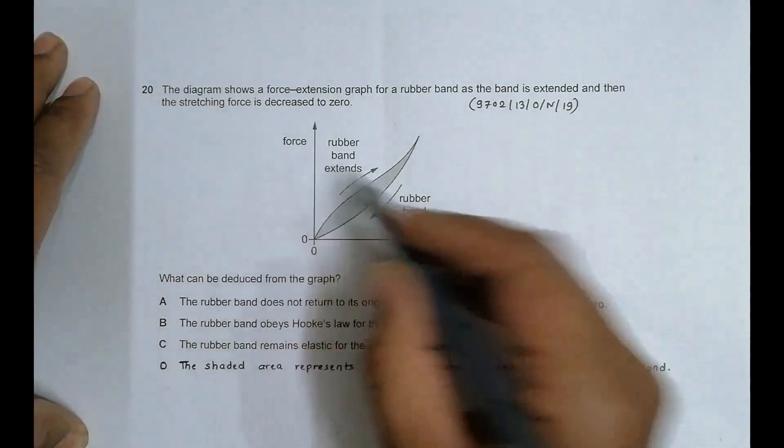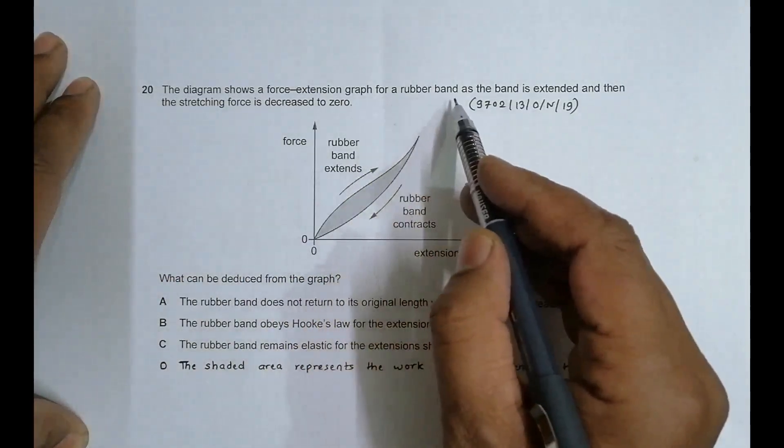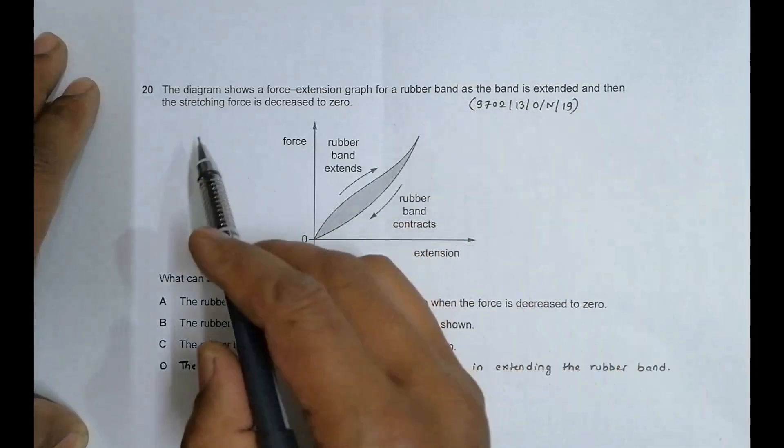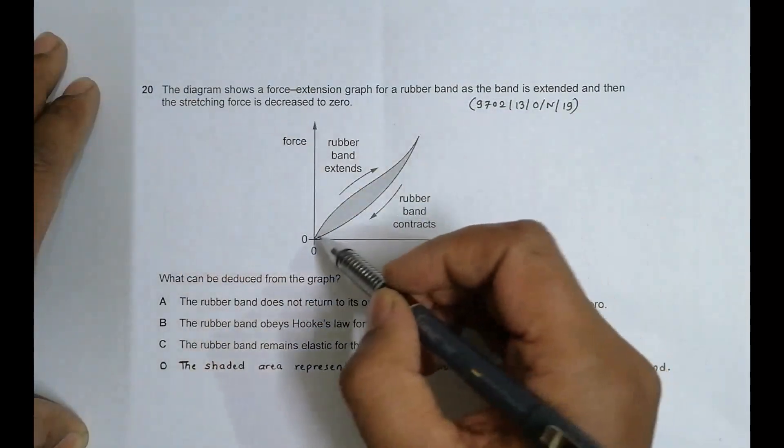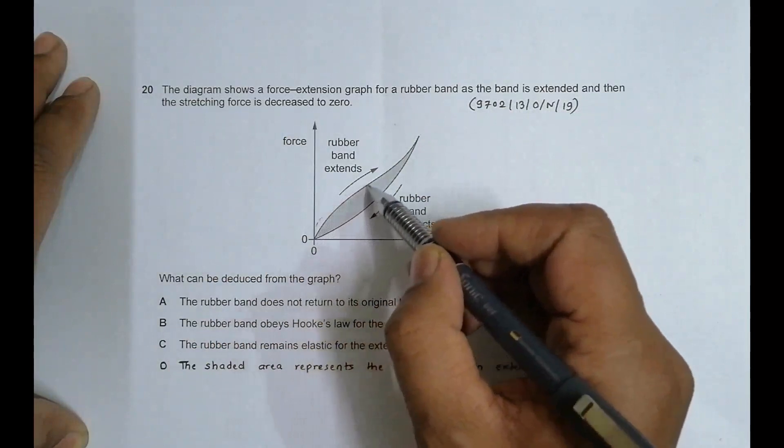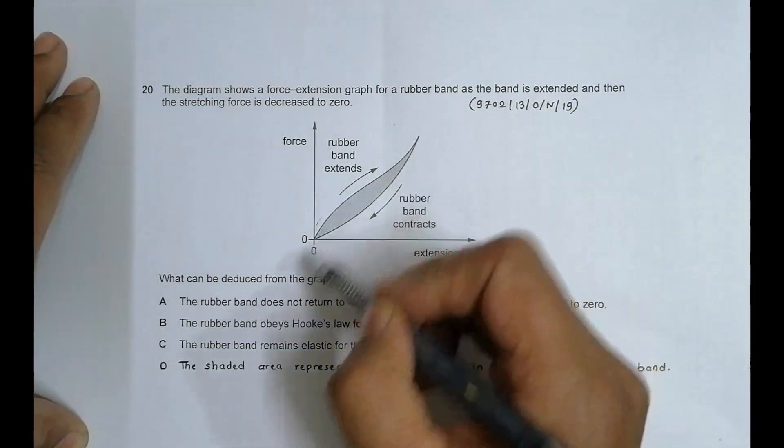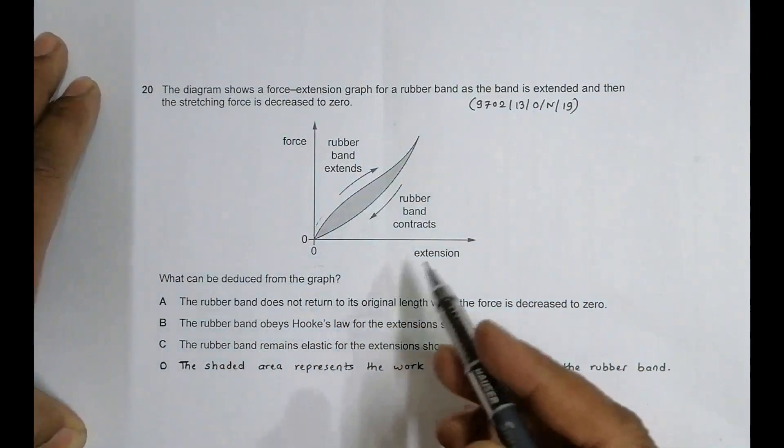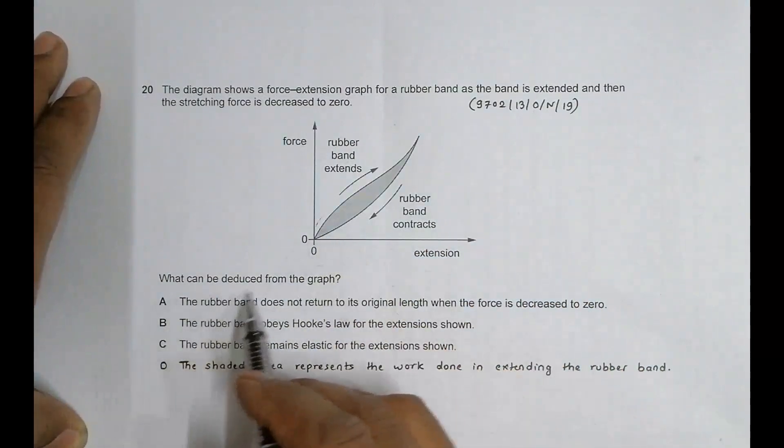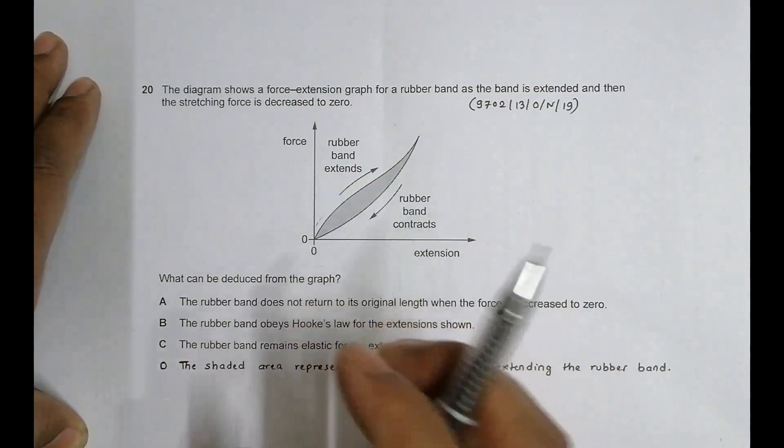The force-extension graph shows a rubber band as the band is extended and then the stretching force is reduced to zero. So this was the curve as the band is extended, and this shows the curve as the band returns back to its original position.